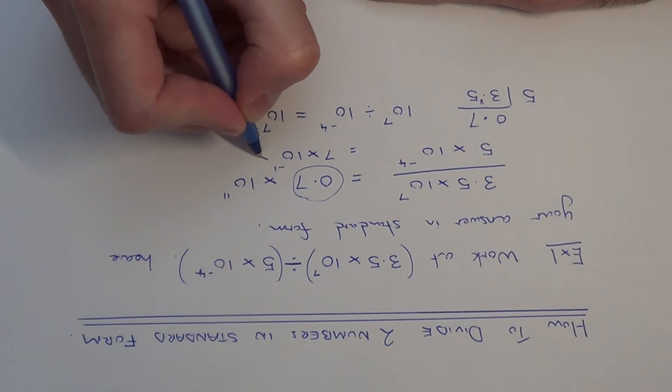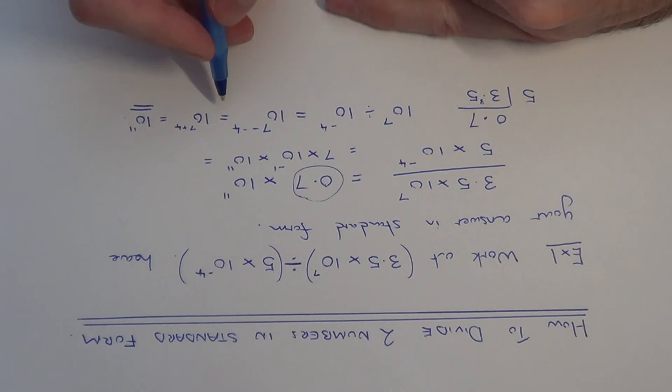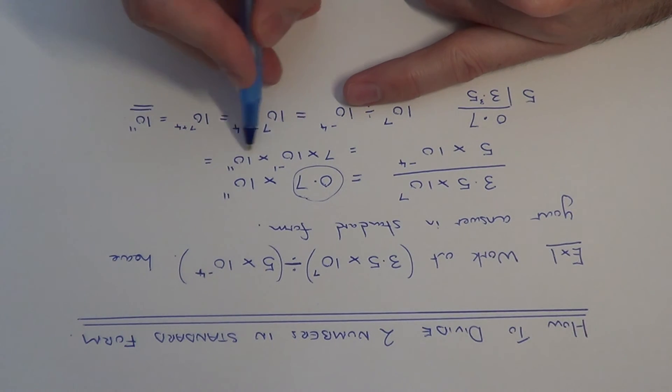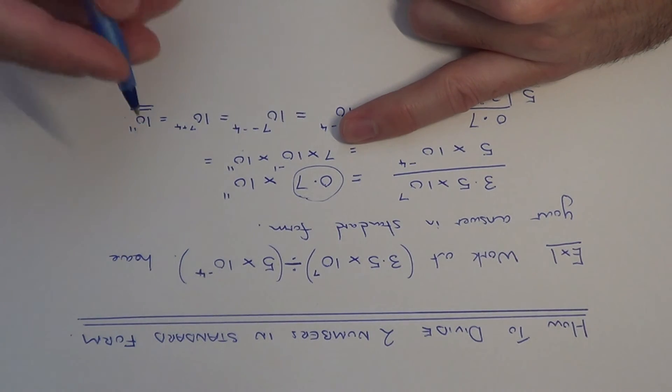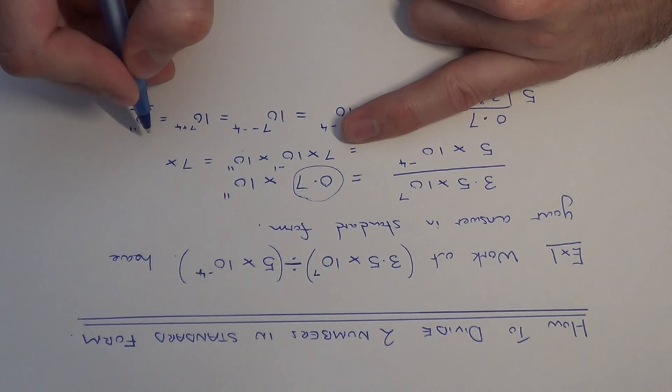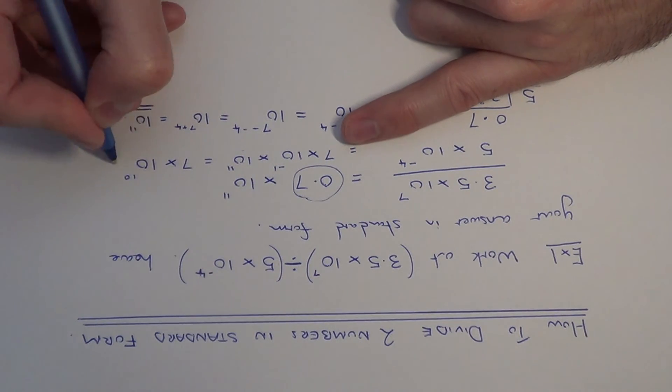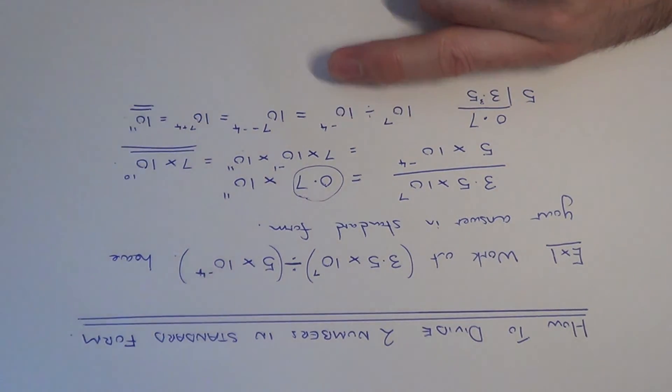And then we've still got times 10 to the power of 11 at the end. So we're nearly done now. So we just need to multiply these powers of 10 together. So when you're multiplying powers, you add the powers at the top. So minus 1 add 11 is 10, so we get 10 to the power of 10. So that's our final answer.